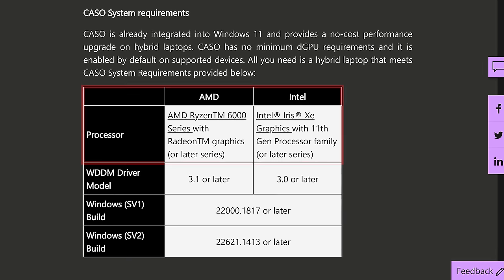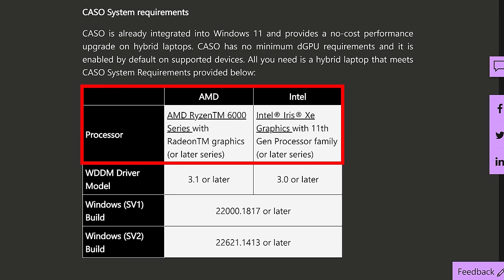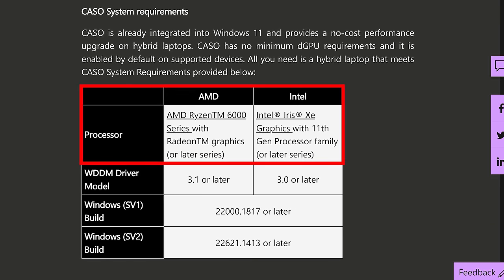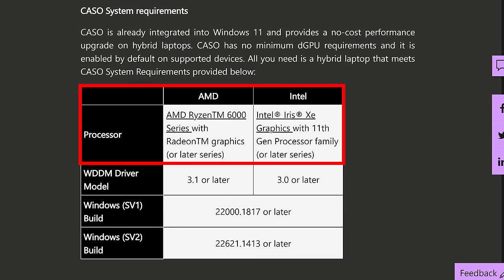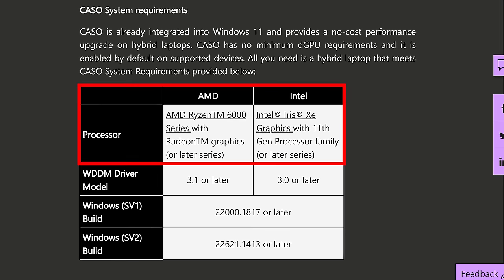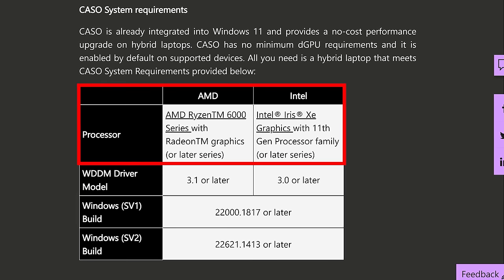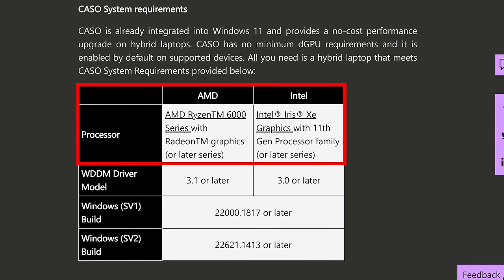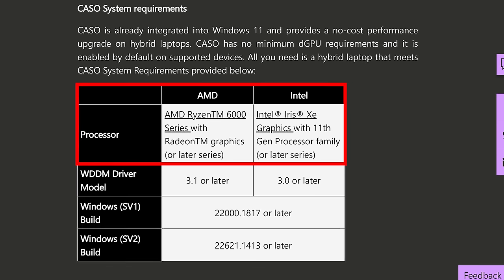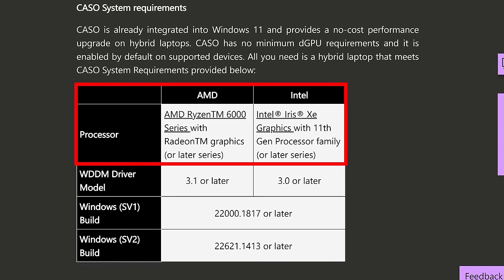Right now, KSO is supported by either AMD Ryzen 6000 and newer processors, or 11th gen and newer for Intel. 11th gen came out a whole year before Ryzen 6000, so Intel is better supported, and there's not currently any word if we'll see older hardware supported. Honestly that kind of sucks, because the MUX switch was far less common in laptops that had Ryzen 5000 and 4000 processors, so I really hope those older processors get KSO support in future.